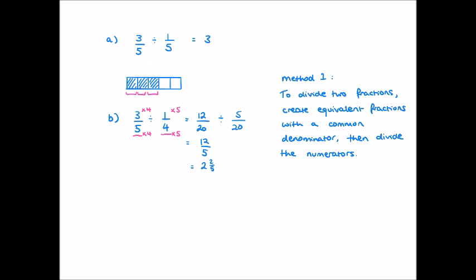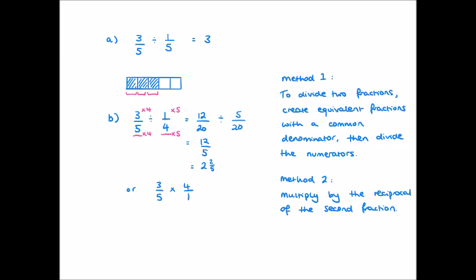There is an alternative method, sometimes called keep-change-flip. To divide two fractions, we multiply the first fraction by the reciprocal of the second fraction — found by switching numerator and denominator. So three-fifths divided by a quarter becomes three-fifths times four over one. Multiply the numerators: three times four is twelve; the denominators: five times one is five — giving twelve-fifths. Either method is fine; it's personal preference.